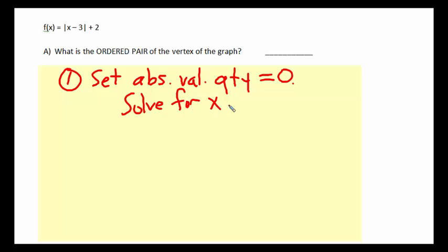In this case, the absolute value quantity is X minus 3. So you say, well, X minus 3 has got to be 0. That's a really quick solve. You can tell X has to be 3.